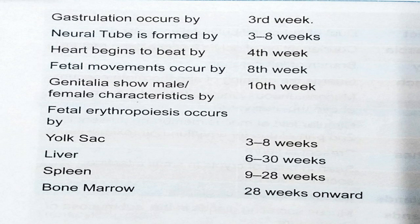The heart begins to beat by the fourth week. Fetal movement occurs by the eighth week. Genitalia show male and female characteristics by the tenth week. Fetal erythropoiesis occurs in four organs: yolk sac from third to eighth week,